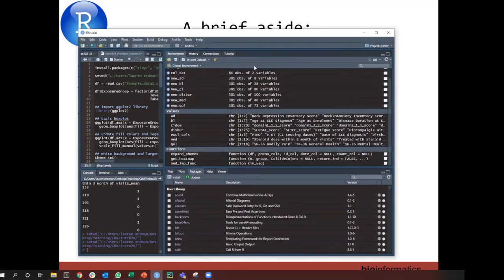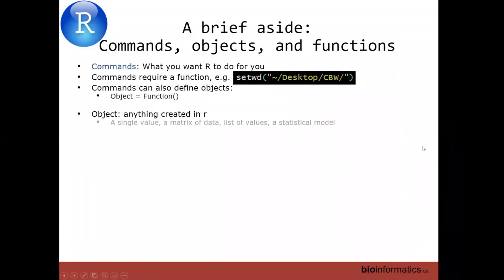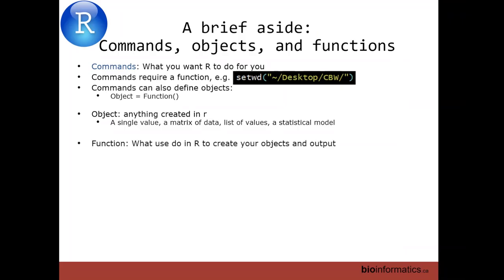An object is anything you create in R, and you can see what objects exist in your R environment pane. I've run lots of things and that's why my environment is filled with many objects. Yours should be relatively empty unless you've run some of these lines — in which case maybe you have DF here. Objects can be a single value, a matrix, a list of values, a statistical model, a function — all kinds of things you've created in your R environment.